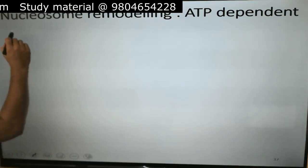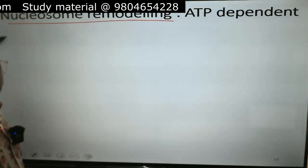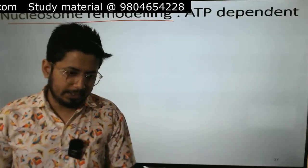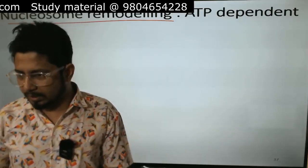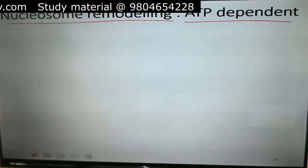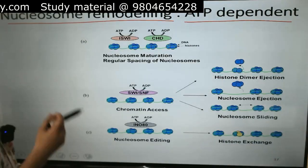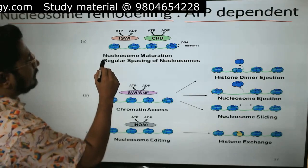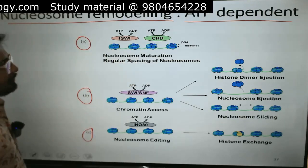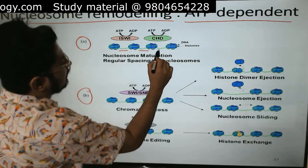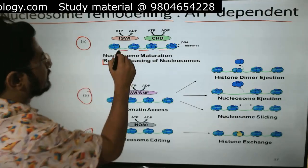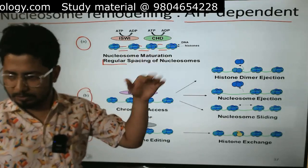What are the types of nucleosome remodeling? Nucleosome remodeling refers to modification of an existing nucleosome structure, and it is an ATP-dependent process. One example is nucleosome maturation, where the spacing between histones is regular — meaning two histones have the same distance between them. This is a natural condition, and it is needed for compactness and forming a compact nucleosome structure.